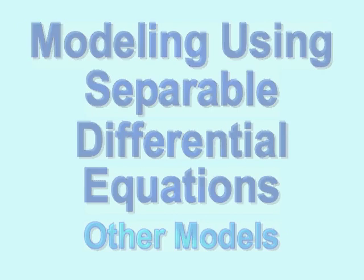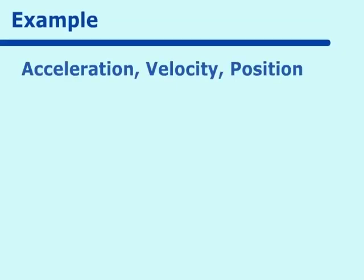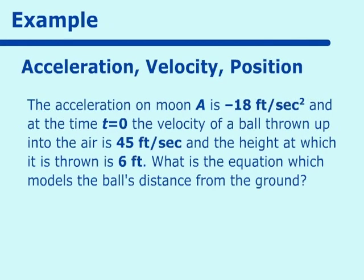The first one is an acceleration-velocity-position type problem. The acceleration on the moon is negative 18 feet per second squared, and at time t equals 0, the velocity of a ball thrown up into the air is 45 feet per second, and the height at which it is thrown is 6 feet. What is the equation which models the ball's distance from the ground? If you've had a good pre-calculus background, you could figure this out right away, and we will talk about that after we finish our explanation through differential equations.